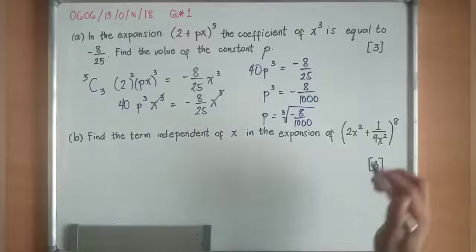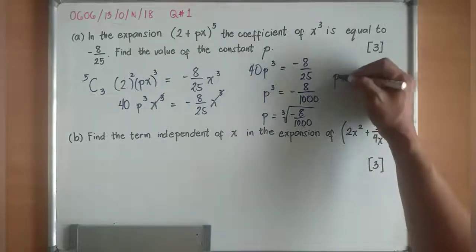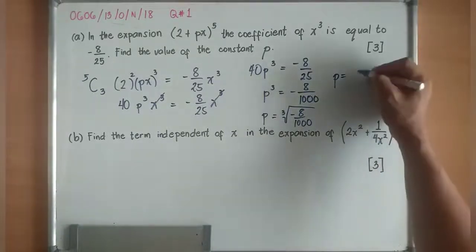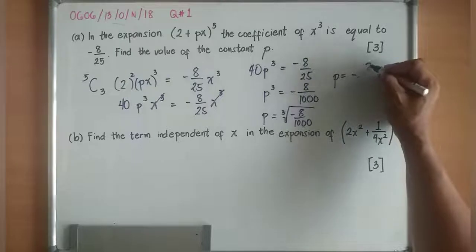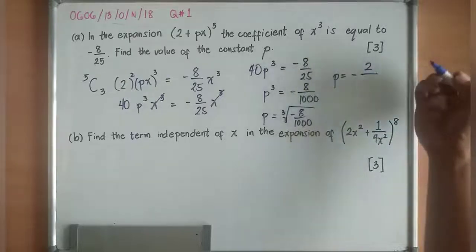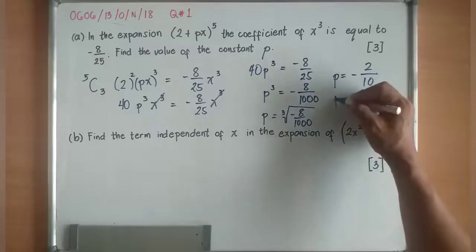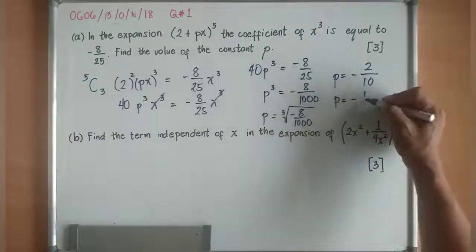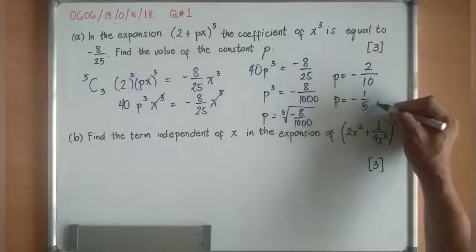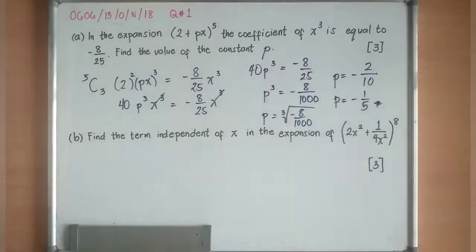And the cube root of -8/1000, p now is equivalent to -2/10. And -2/10 will be -1/5. So this is the value of the constant p, -1/5.